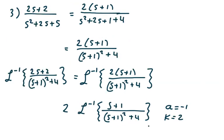Let's take a look at example 3. Suppose we have 2s plus 2 over s squared plus 2s plus 5. I'm going to complete the square. I'll factor a 2 out of the numerator and get 2 times (s plus 1) over s squared plus 2s plus 1 plus 4, since 5 is just 1 plus 4. Those first three terms form a perfect square, so I can write that as 2 times (s plus 1) divided by (s plus 1) squared plus 4.